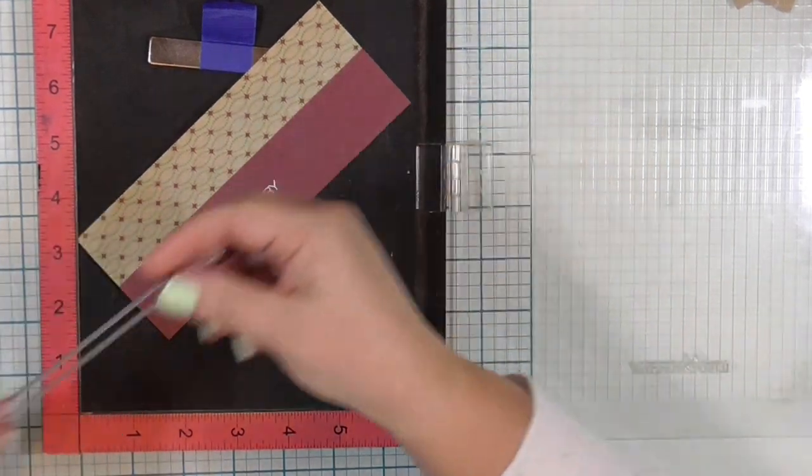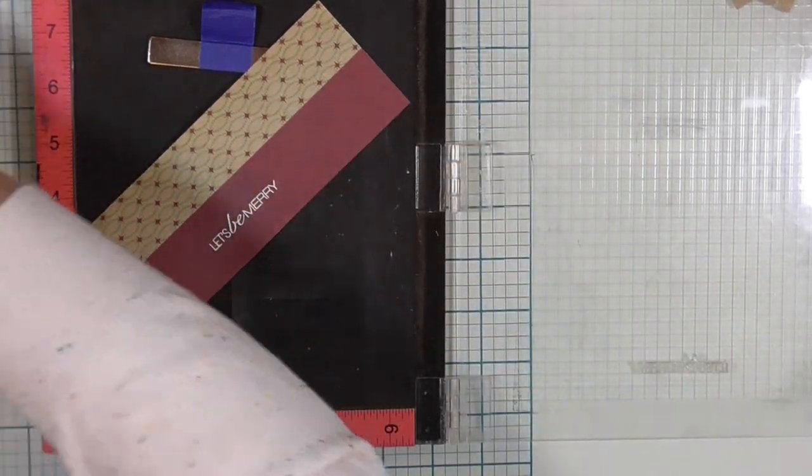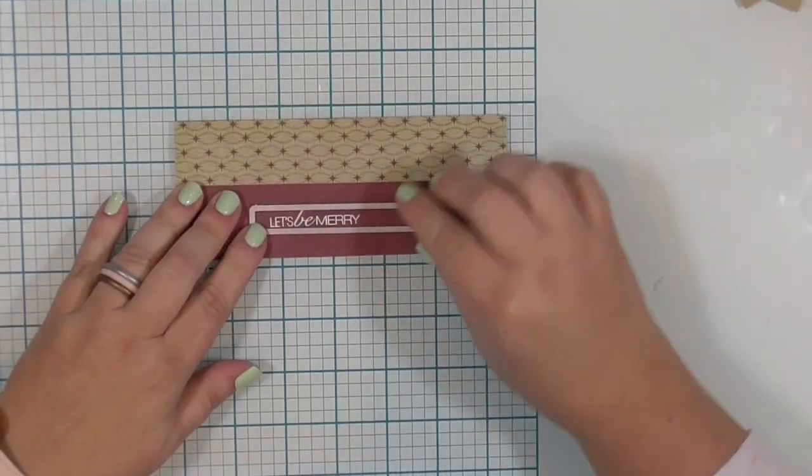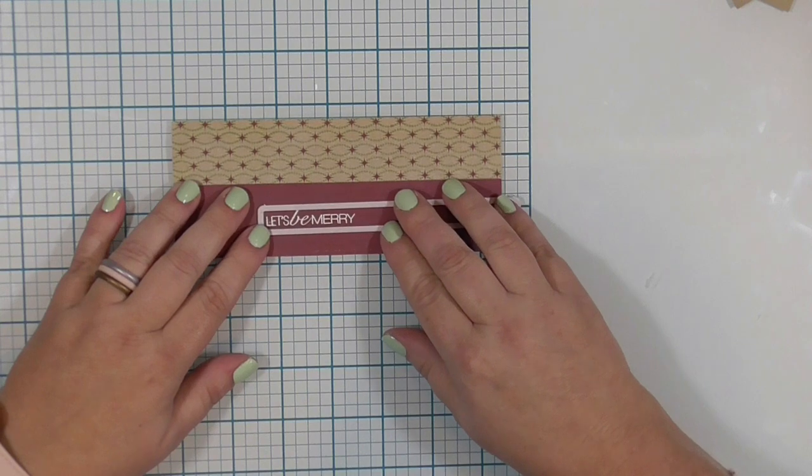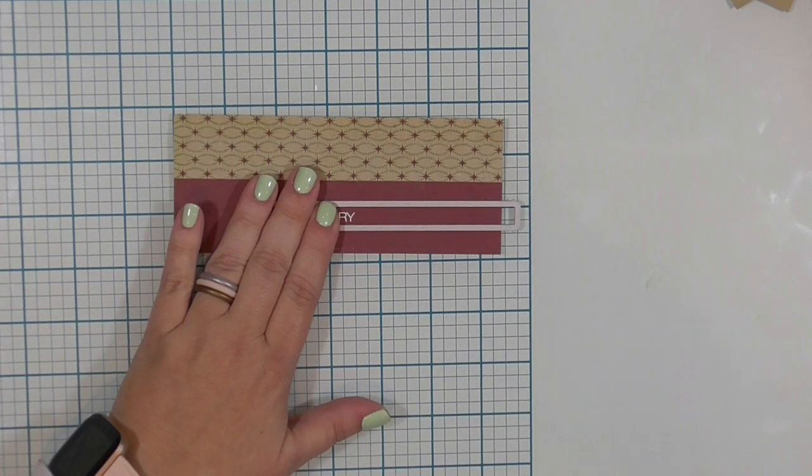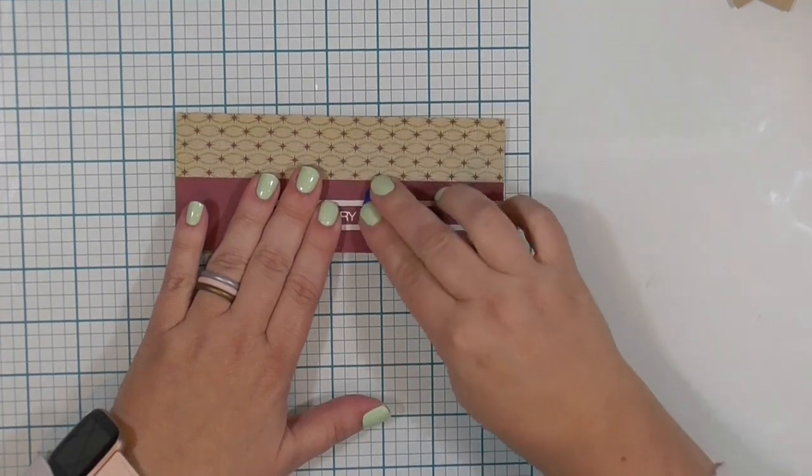I'm going to cut that off screen and just tape that down. I want to make sure that I get it clear up to that left side edge. Left hand edge. There we go. Words are hard today.